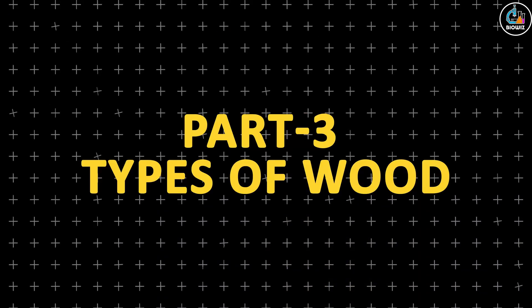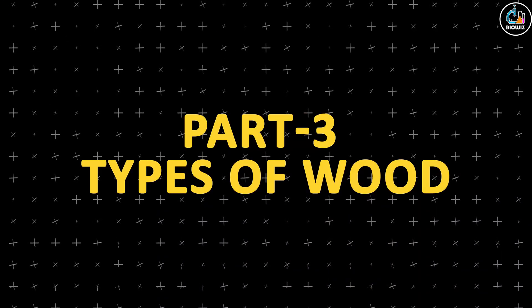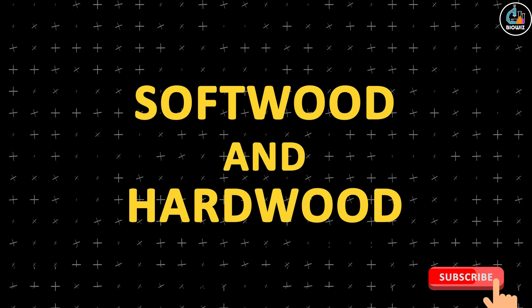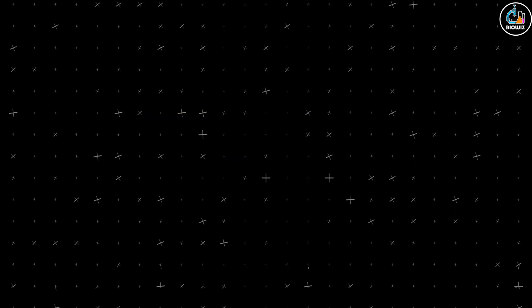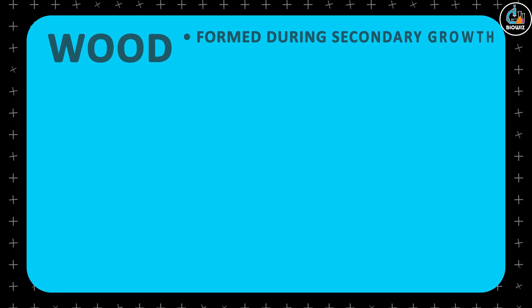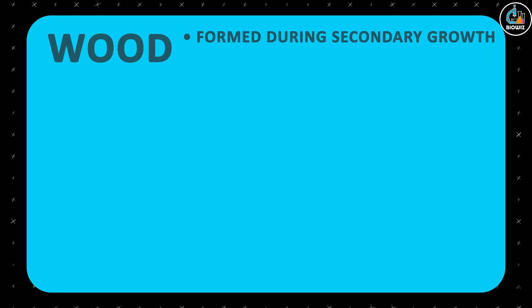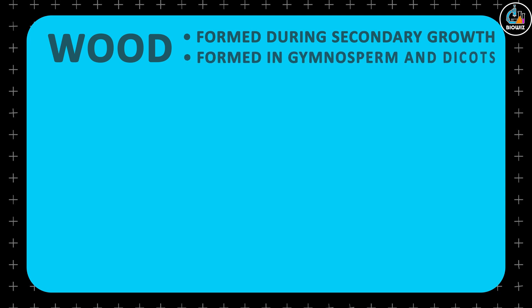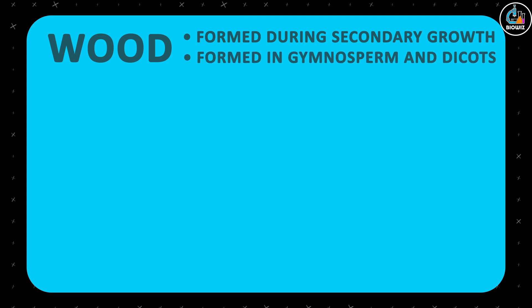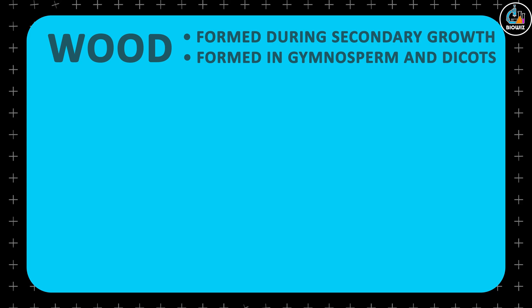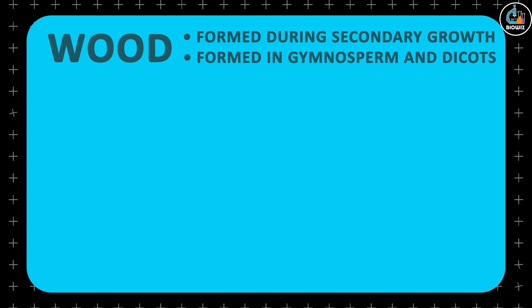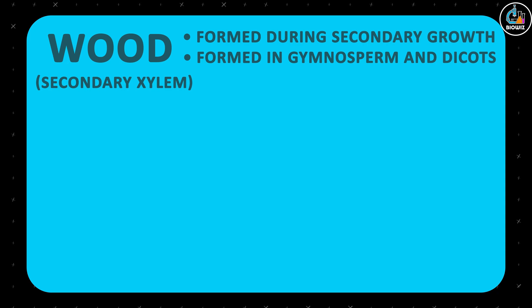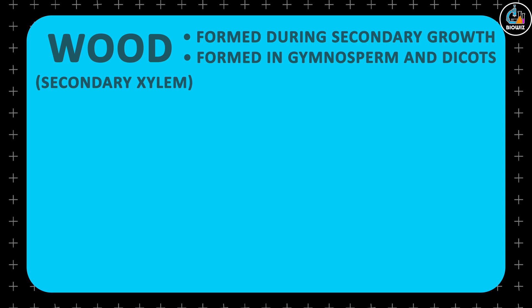Hi everyone, this is part 3 of the topic 'Types of Wood,' and the last type of wood we are going to see is hardwood and softwood. The formation of wood occurs during secondary growth and is mainly a feature of gymnosperms and dicot angiosperms. As already mentioned in the previous parts, wood is the secondary xylem tissue of the plant.